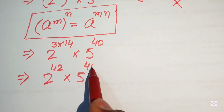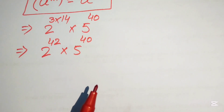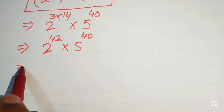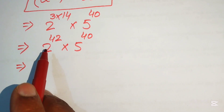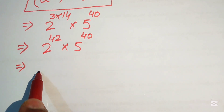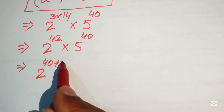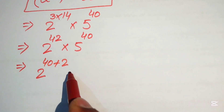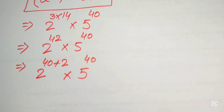After this step, we rewrite the expression by breaking the exponent 42. We write 42 as 40 plus 2, so we have 2 to the power of (40 plus 2), multiplied by 5 to the power of 40.